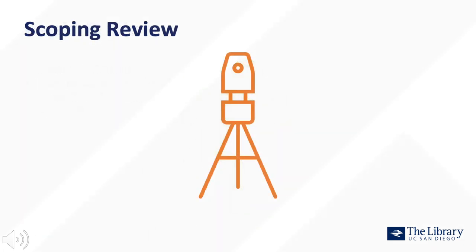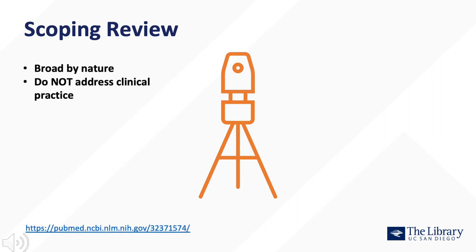A scoping review may be a good option if your research question is less well-defined, and you wish to determine the volume and scope of evidence available about a topic. Scoping reviews are necessarily broad and are used to determine whether there is ample evidence to pursue a more focused question that might be addressed by a systematic or other review. Critically, scoping reviews do not address recommendations to clinical practice or policy. They are a preliminary step used to determine what evidence exists, not to appraise it. Check the links in the video information section to see an example of a scoping review.